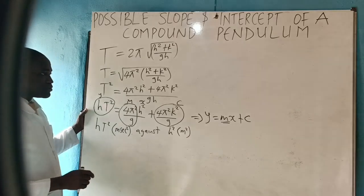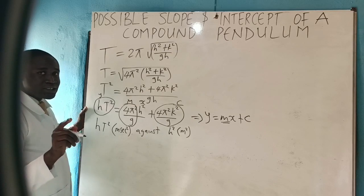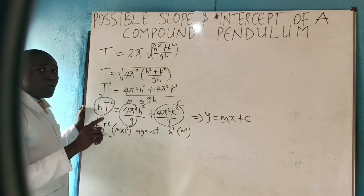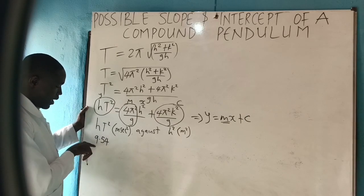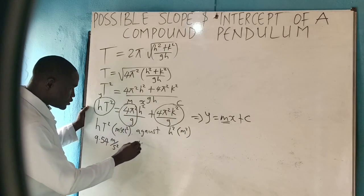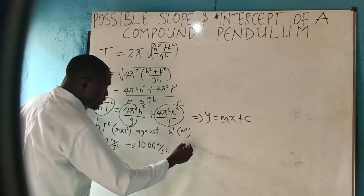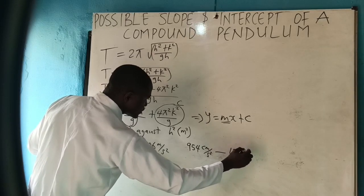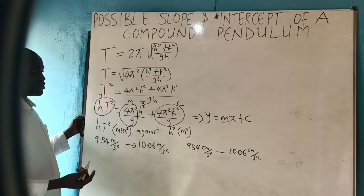We said that g is constant at 9.8 meters per second squared, but because no one is perfect we cannot guarantee everyone will get exactly 9.8. So it has a range: from 9.54 meters per second squared to 10.06 meters per second squared, or equivalently 954 centimeters per second squared to 1006 centimeters per second squared. That is the acceptable range.